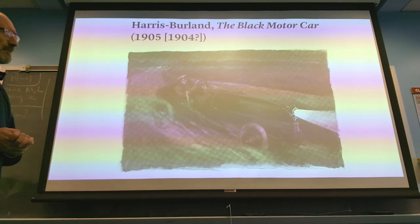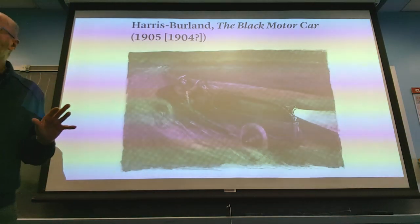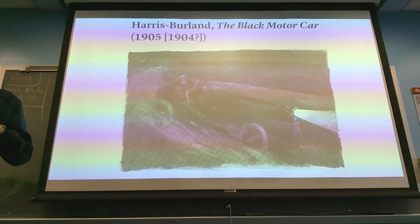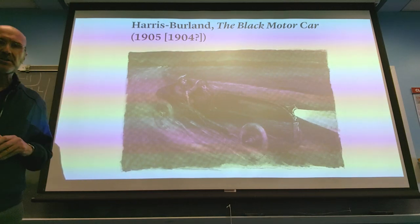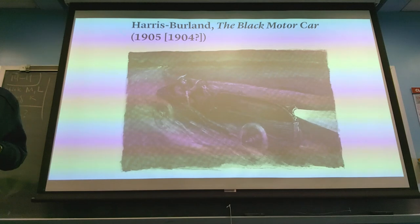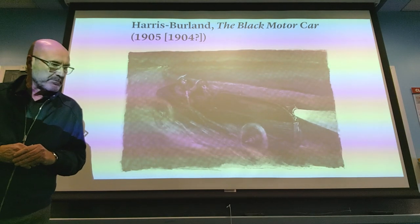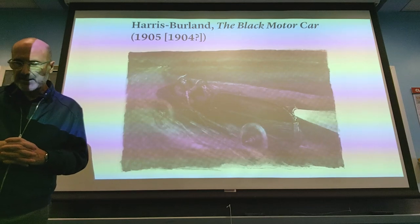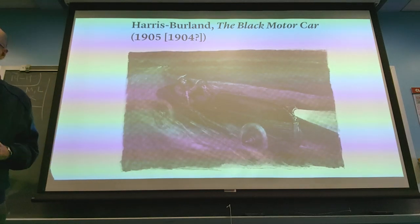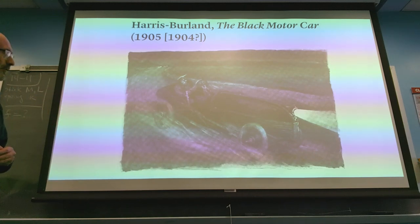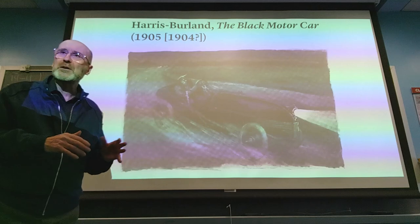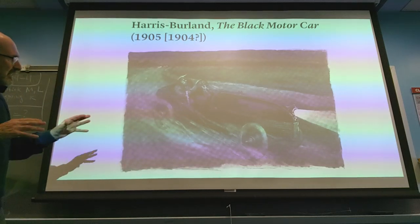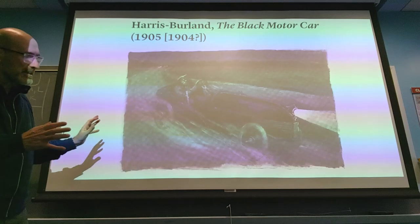I want to talk briefly about another book that is not a science fiction book — it's a dark tale, a crime story in a way. It's called The Black Motor Car. It was published by a British writer in 1905, and it might have come out in bookstores before the end of 1904. As you can see from the illustration, at the very center of the novel you find a prodigious car. This time it's not like the Terror — it is just a car.